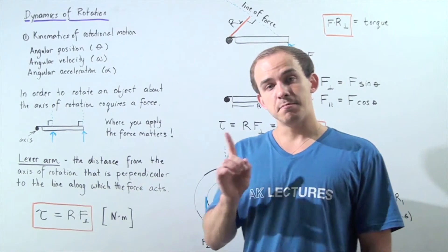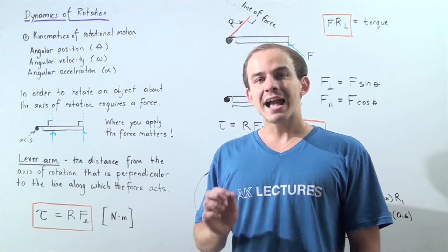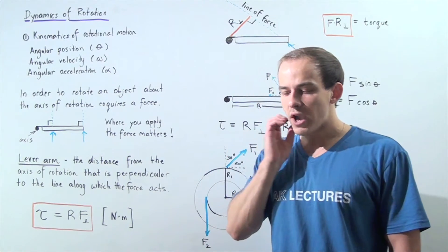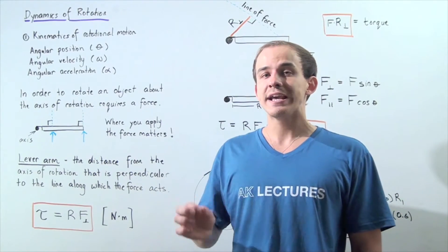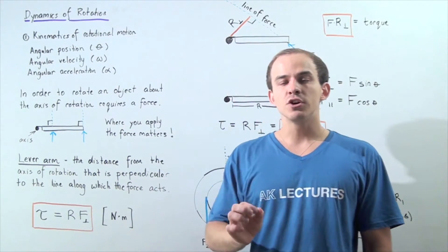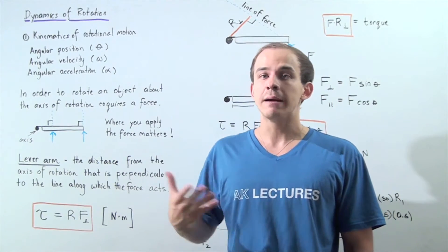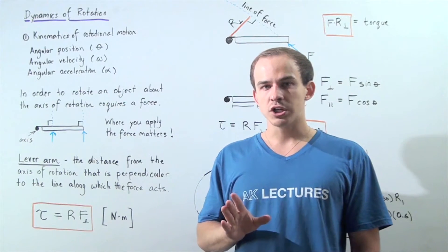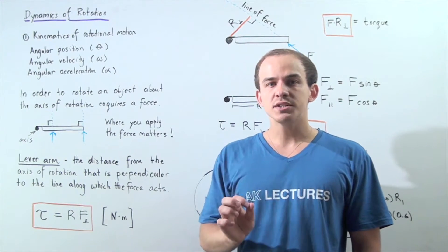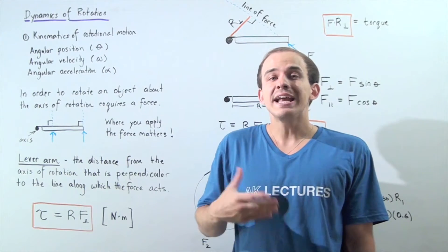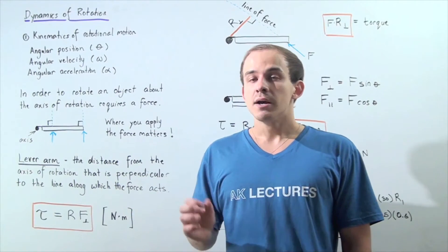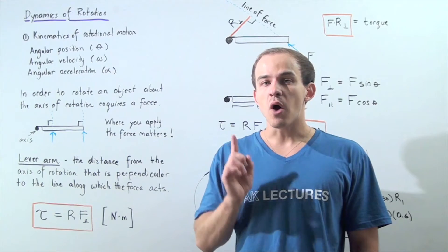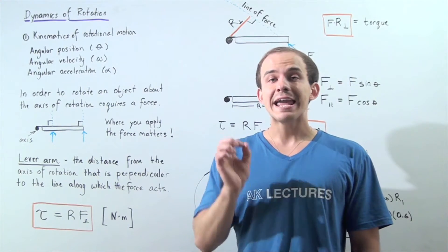Now we still haven't answered a very basic but important question: what exactly creates angular or rotational motion? Well, in the same way that a net force is required to create translational motion, a net force is required for an object to accelerate. When we talk about angular motion, in order for an object to rotate about an axis of rotation, a net force must act on that object. But the net force is not the only quantity that affects our angular motion.